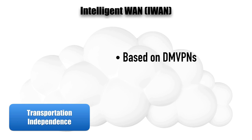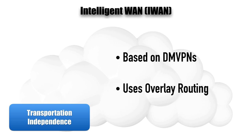In other words, we can bring up a VPN connection on demand, on an as-needed basis, using overlay routing — which means routing protocols like OSPF or EIGRP see the VPN endpoints as next-hop addresses rather than whatever the underlying technology might use.